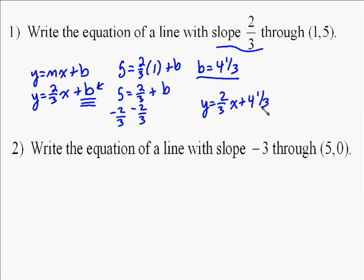We're going to do the exact same thing on the second problem. We're going to insert our slope into there first. So we're going to do y equals negative 3x plus b.